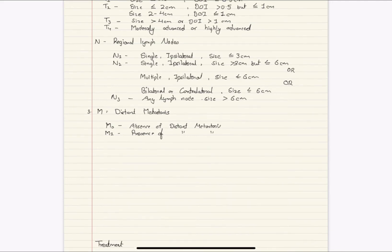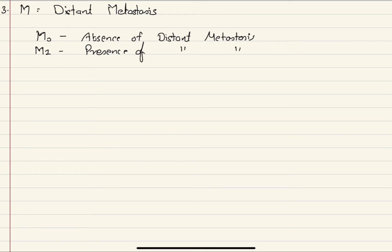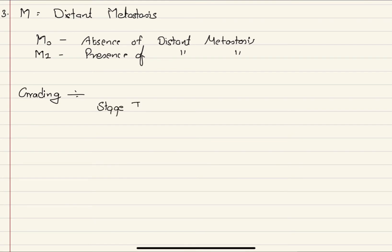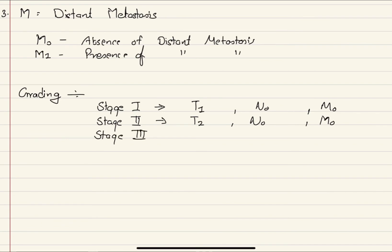Based on TNM classification, we can grade the tumor by stage. Stage 1 is when the tumor falls under T1 with no lymph node involvement and no distant metastasis. Stage 2 is when the tumor falls under T2 with no lymph node involvement and no distant metastasis. Stage 3 is when the tumor is T3 with no lymph node involvement and no metastasis, or when the tumor is T1, T2, or T3 with N1 lymph node involvement and no metastasis.